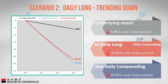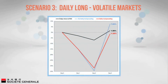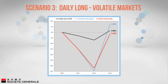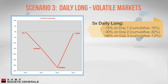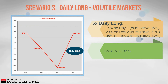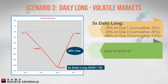Daily long — volatile markets: The downside of compounded returns comes from volatile markets where prices change on an erratic basis from one day to another. The five times daily long fell 15% on day one and 20% on day two before rising by 45% on day three. The important point to note is that the 45% rise on day three only takes the five times daily long back to a value of 2.47 Singapore dollars, because it was only valued at 1.7 Singapore dollars when it began to recover.